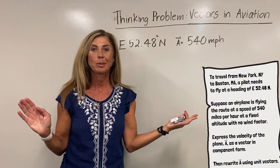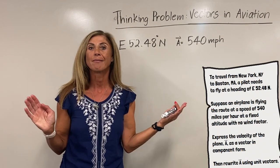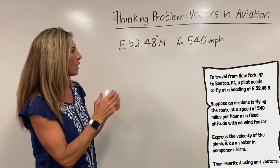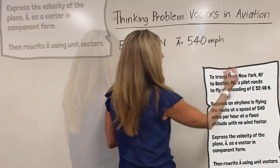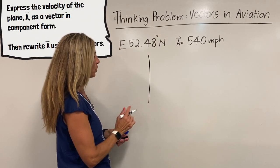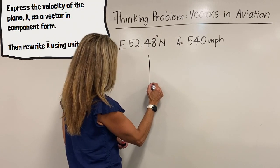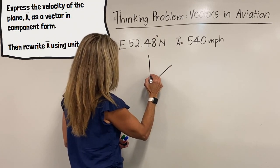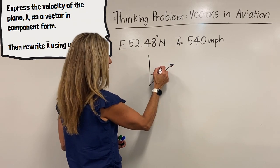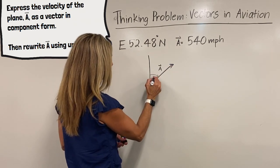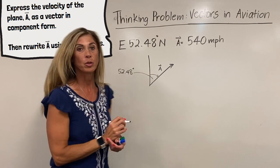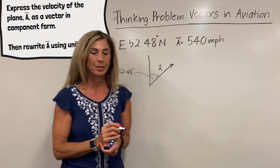Before we start any problem, try and visualize it — let's draw a diagram. We have east 52.48 degrees of north, roughly there. And here is our plane vector. If this is the angle that's been given,